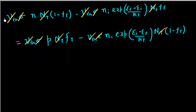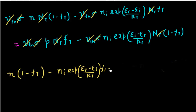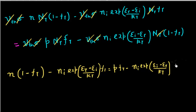Collecting the remaining terms, I get: N times (1 minus Ft) minus Ni times exp((Et minus Ei)/kT) times Ft, and this is equivalent to P times Ft minus Ni times exp((Ei minus Et)/kT) times (1 minus Ft).